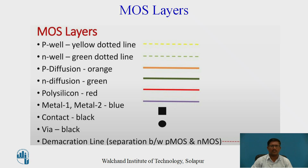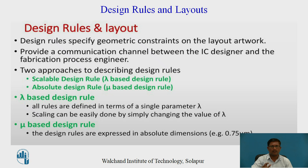The mask layers are: P-well, shown by yellow color; N-well, shown by the green dotted line; then P diffusion and N diffusion shown by different colors; then polysilicon; then Metal 1 and Metal 2; then contacts; then wire; and then the demarcation line. These were already discussed in the schematic as well as the stick diagram design.